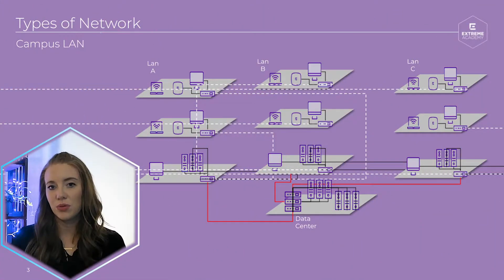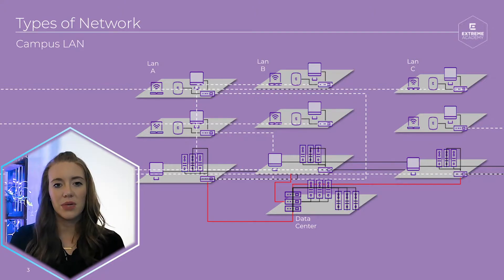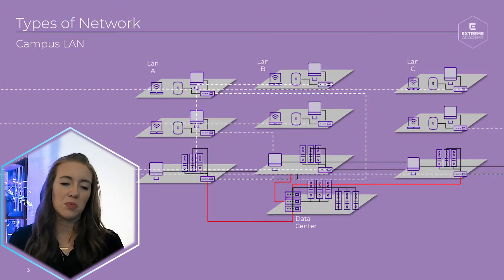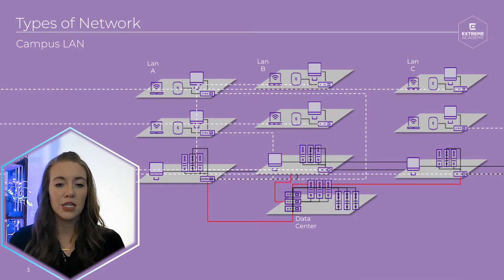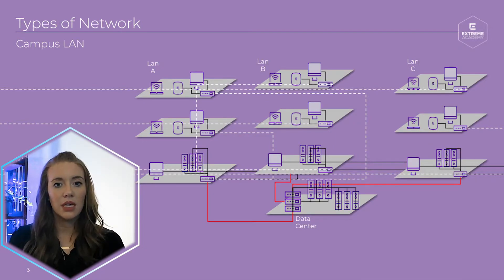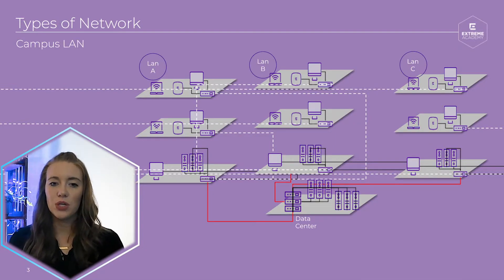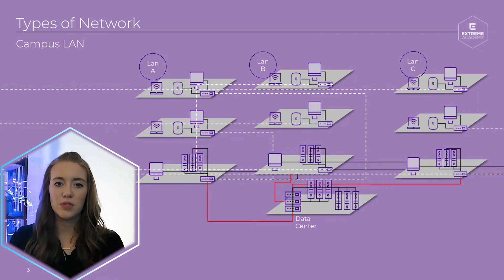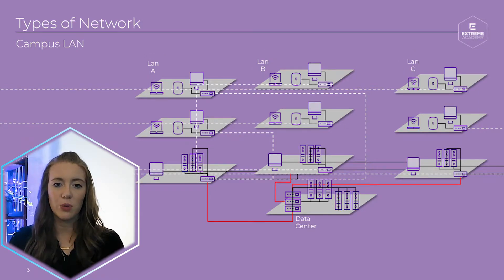A CAN, or a campus area network, is a network that connects two or more LANs together within a limited area. For example, a university with multiple buildings on a single campus would form a CAN. Each building has its own LAN, and when you connect each of those buildings, it becomes a campus area network.